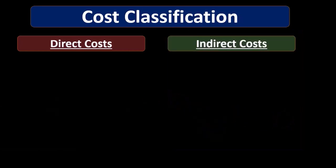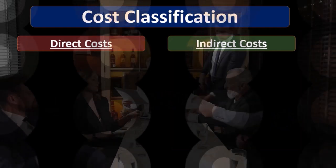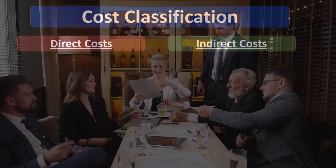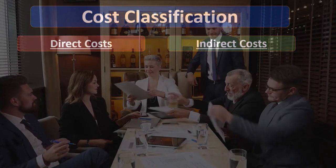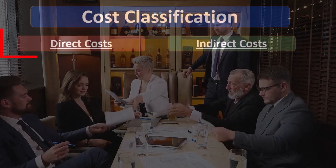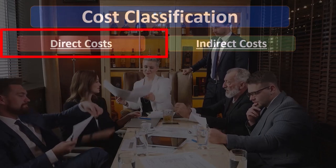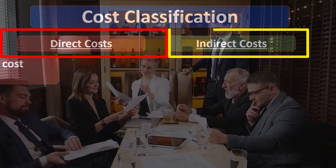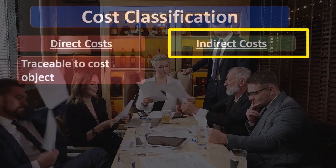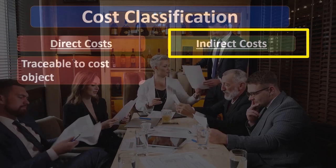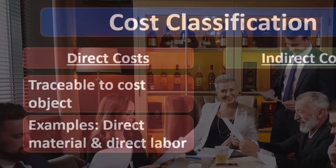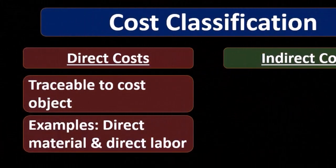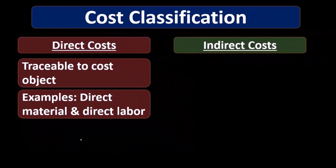Another way that we can classify costs is by function — what does that cost do, why are we incurring this cost? We can have direct costs and indirect costs. Direct costs are costs that are traceable to a cost object. So if we're in a production cycle, direct costs would be things like direct materials and direct labor — things that we can trace to a particular unit of inventory that we are producing.